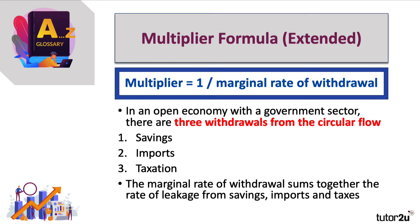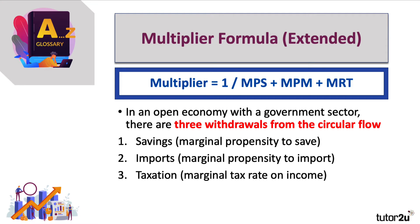The formula for the extended multiplier is one divided by the marginal rate of withdrawal. There are three withdrawals from the circular flow: savings, imports, and tax. So the marginal rate of withdrawal sums together the rate of leakage from people not spending money, people buying goods and services from overseas, and taxes taken by the government. The extended multiplier is one divided by the sum of MPS (marginal propensity to save), MPM (marginal propensity to import), and MRT (the marginal rate of tax).